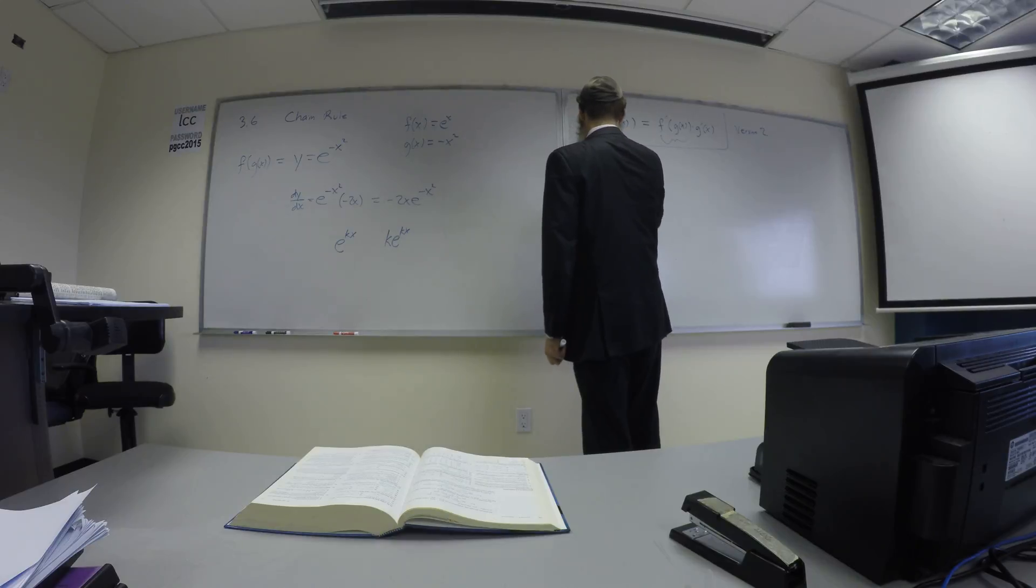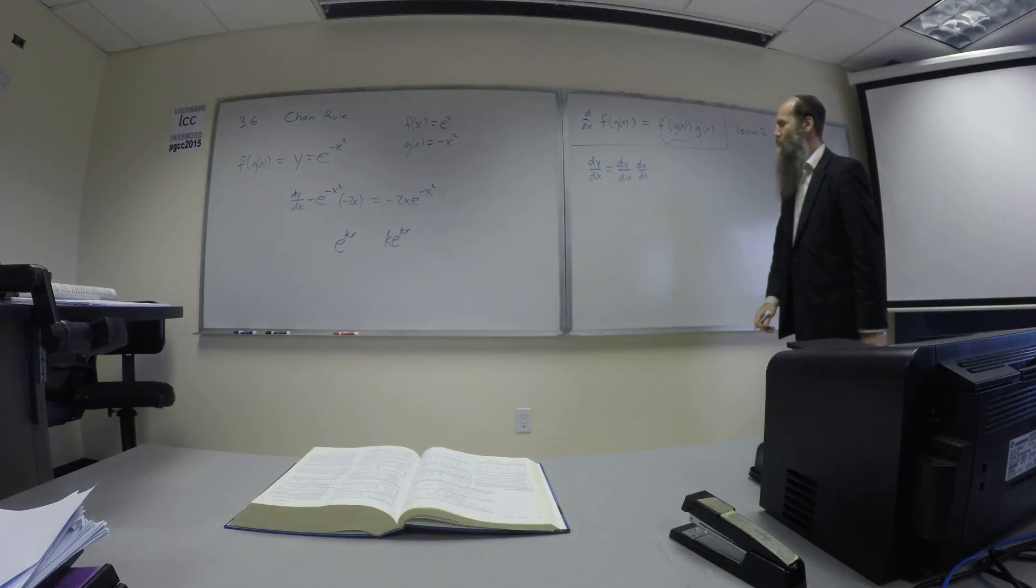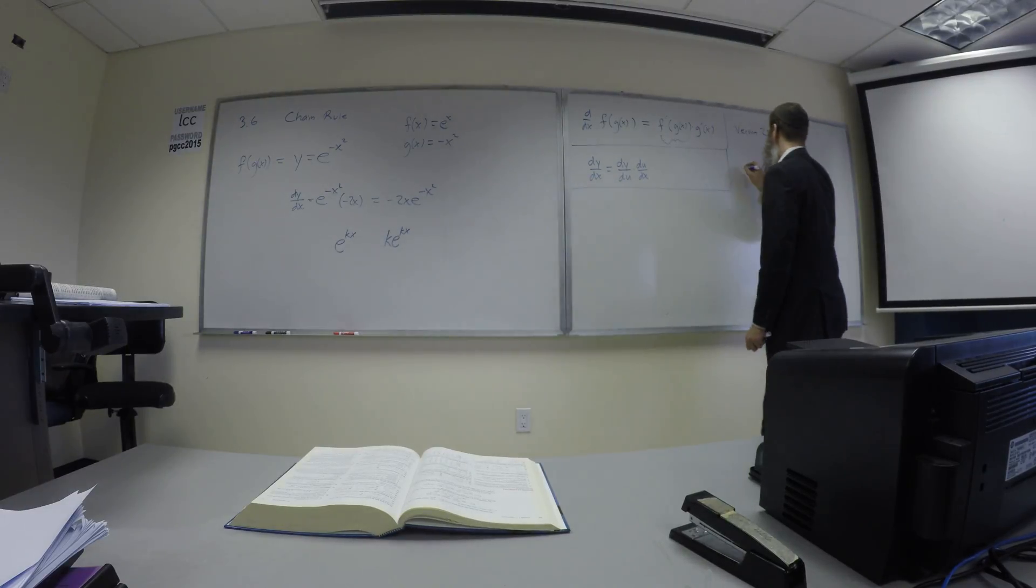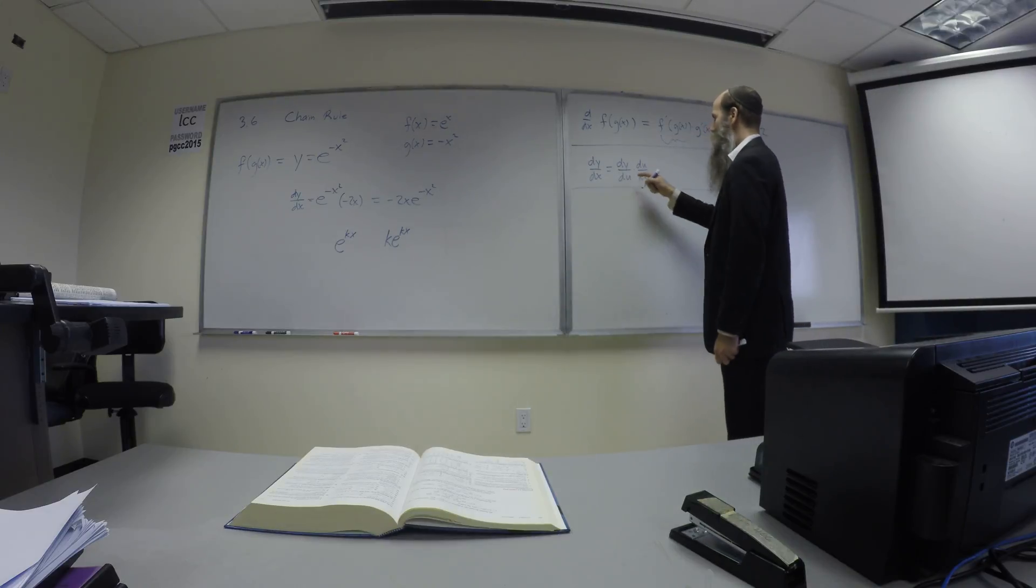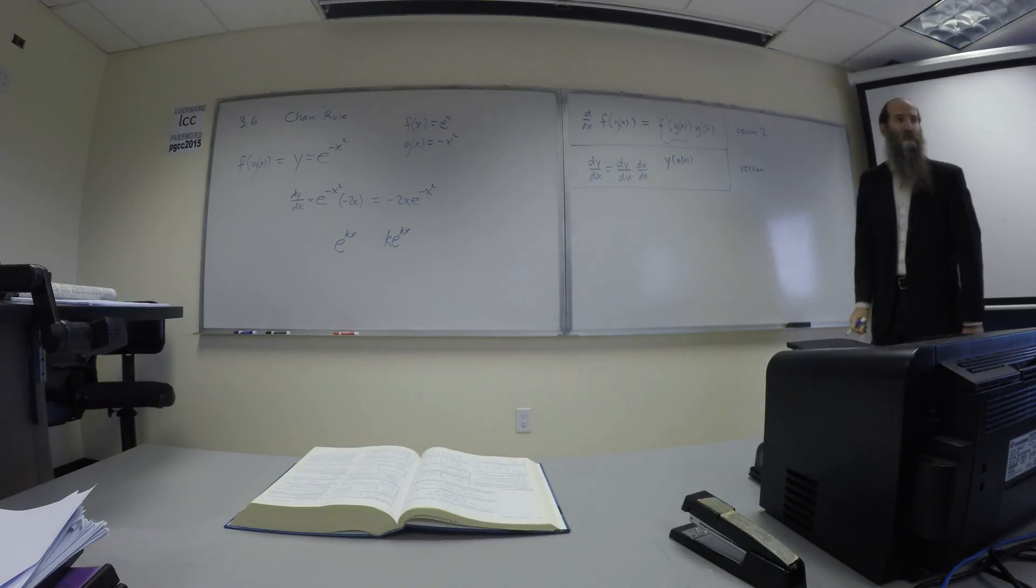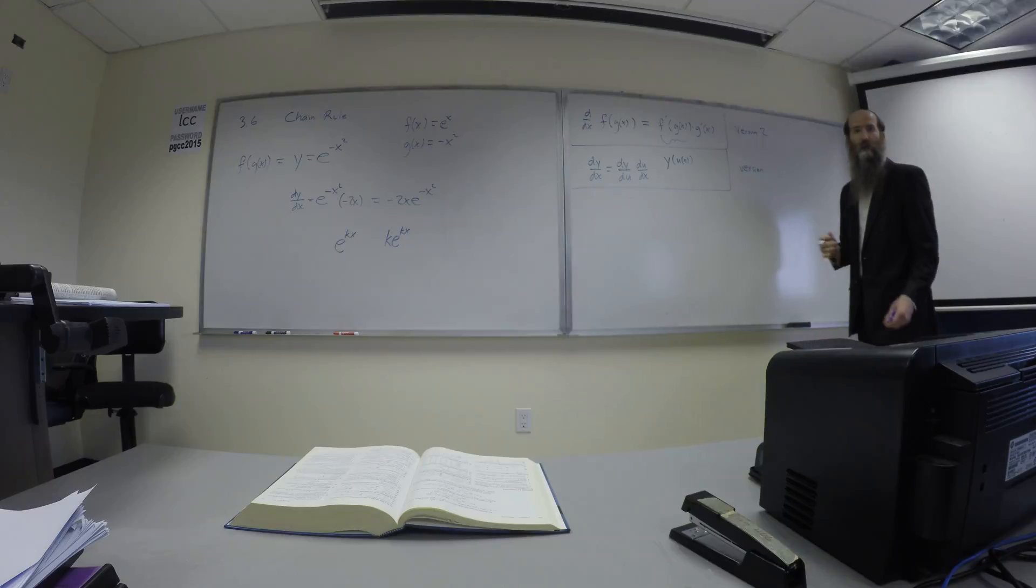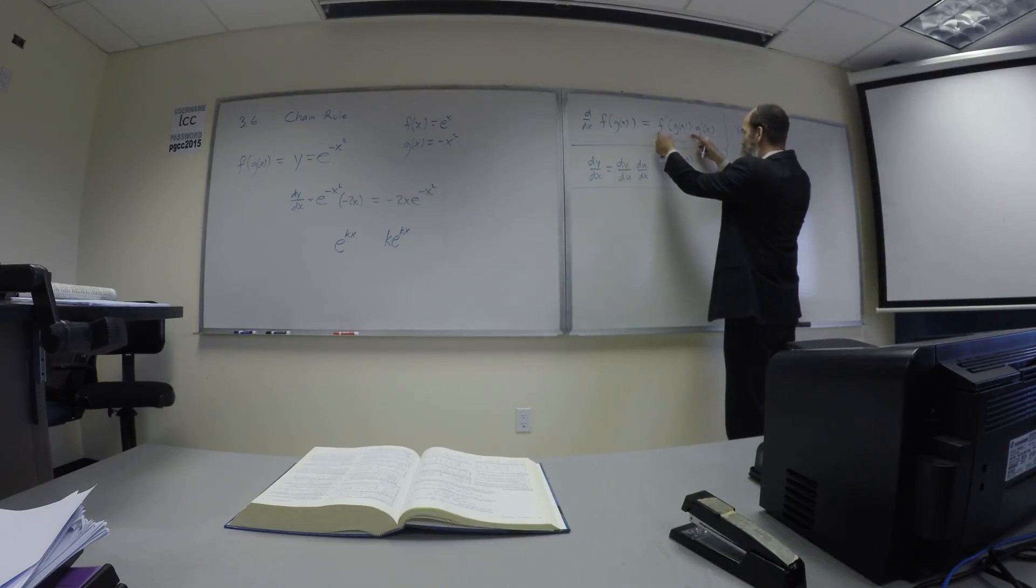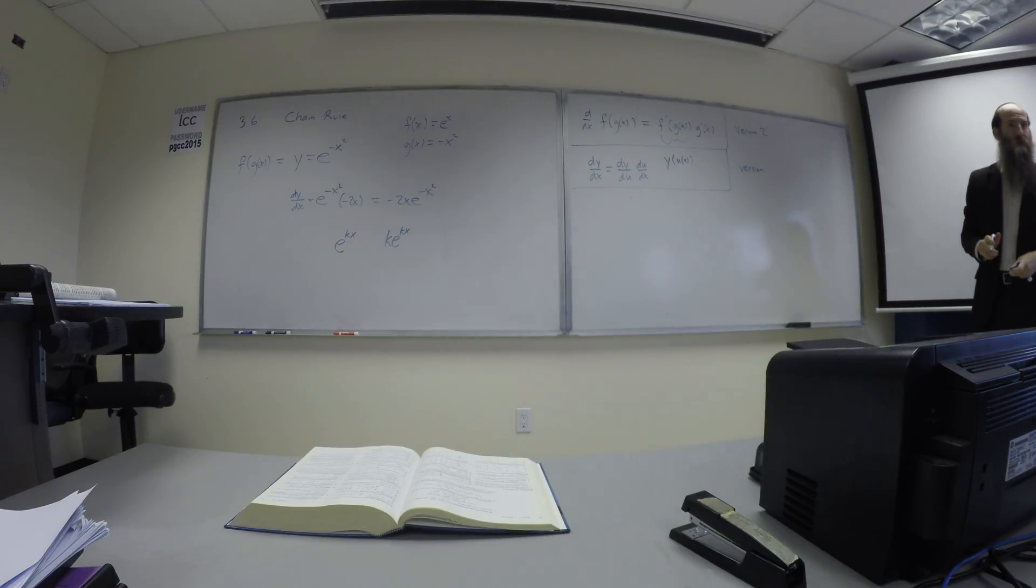dy dx is dy du times du dx. That's chain rule version one. It means, in a sense, there's some sort of intermediate function. That is the inner function. U is actually the inner function. So what this is trying to say is you're just saying the same thing with the Leibniz notation. That's all. Instead of f of x and g of x, they use y and u. And here's dy du is this part, and this is the du dx. It's the exact same thing. Different notation. Exact same thing.